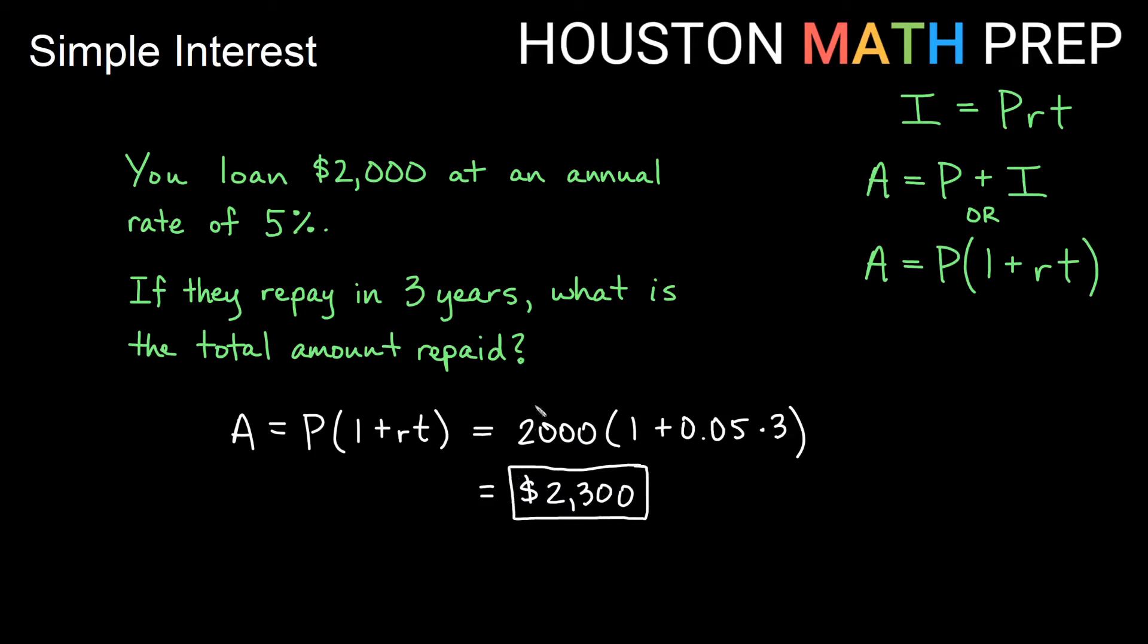If we had done this the other way, we would have found first the interest just by doing P times R times T. We would have gotten $300 interest, I think you can see here, and then we would have gone back and separately added it to the 2,000, the original amount to get our end answer.